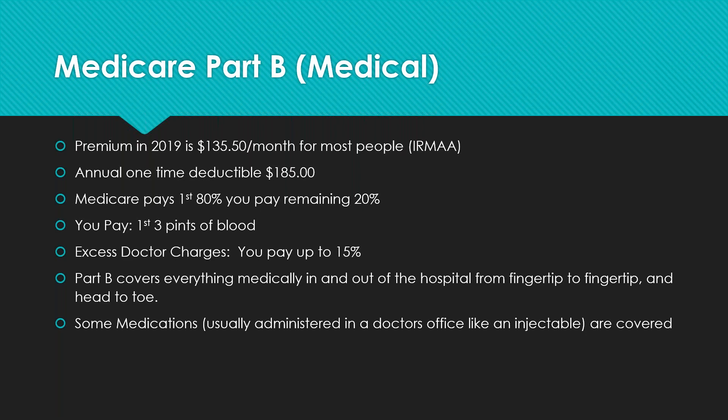Part B has an annual one-time deductible of $185, running January through December — it's not per-occurrence or per-service. After the deductible is met, Medicare pays the first 80% and you pay the remaining 20%. So if the bill is $1,000 and you've already met the $185 deductible, your share is $200 and Medicare's share is $800.